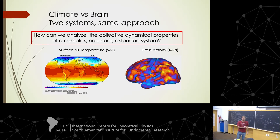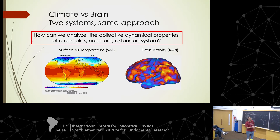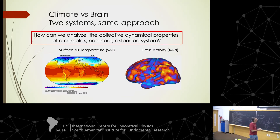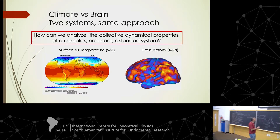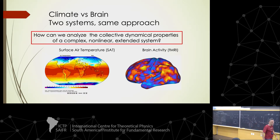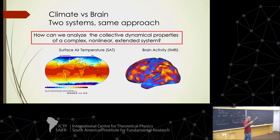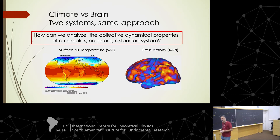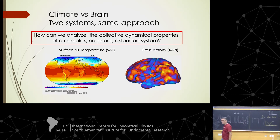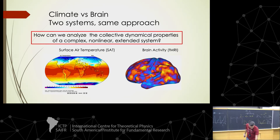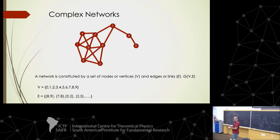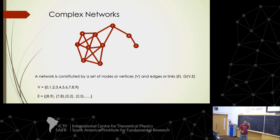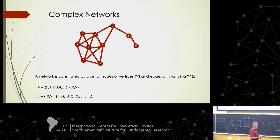This could be very relevant for two different problems. First, how we can analyze the collective dynamical properties of a complex extended system. For instance, here we have measures of surface air temperatures across the whole globe, and here we have brain activity at a large scale measured from functional magnetic resonance imaging experiments. The tool I would like to show you, very suitable for studying this kind of problem, is complex networks.